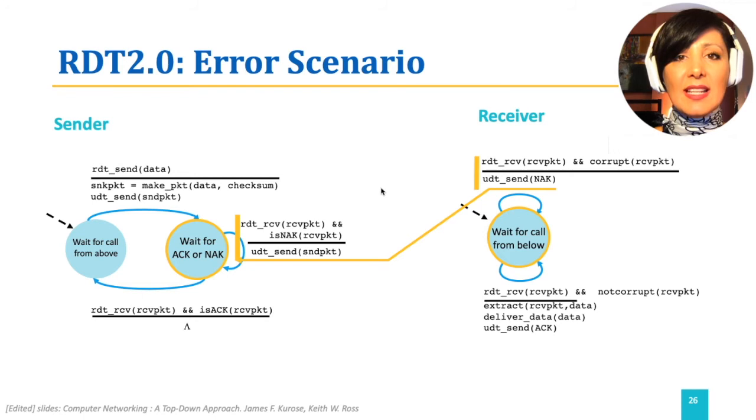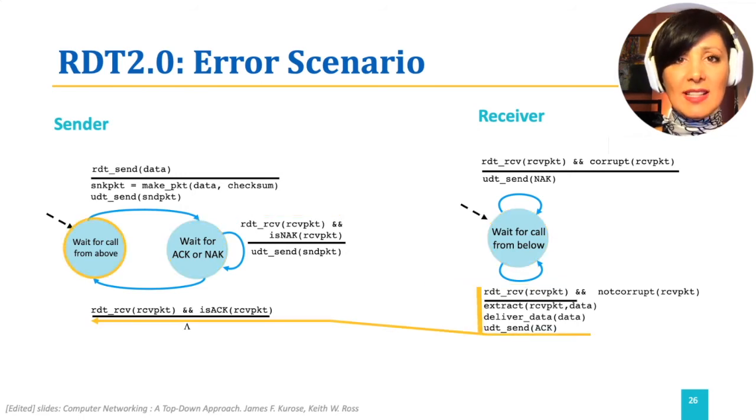On the receiver side, the packet is received. This time, it is not corrupted, and therefore, the packet data is extracted, sent to the upper layer using Deliver Data, and the acknowledgement is sent to the sender using UDTSend. The sender receives the acknowledgement, goes back to the state of waiting for call from the upper layer.